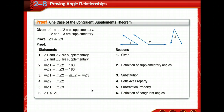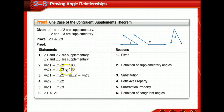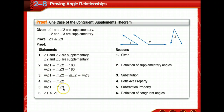Here they are proving one case of the congruent supplements theorem. Angles 1 and 2 are supplementary, and angles 2 and 3 are supplementary — we're given that. By the definition of supplementary angles, each pair equals 180. Since both equal 180, they equal each other by the transitive property. Angle 2 equals angle 2 by the reflexive property. Subtracting angle 2 from both sides shows angles 1 and 3 have the same measure, making them congruent.